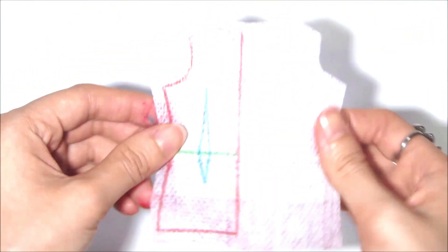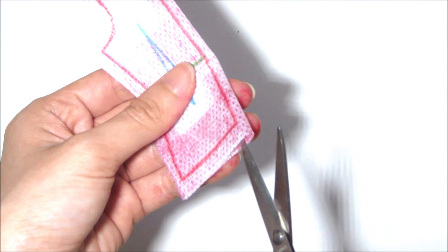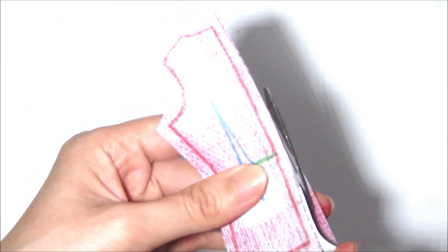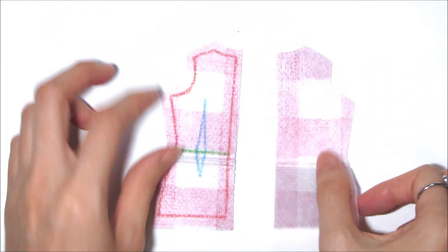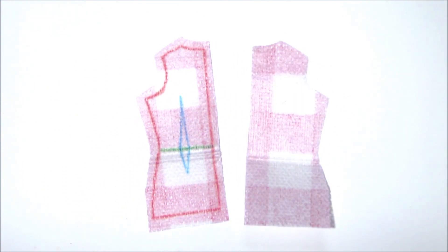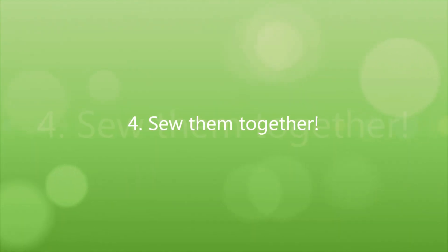So you cut them up, and then we'll cut through it to make it into two different pieces like this. Now, sew them together.